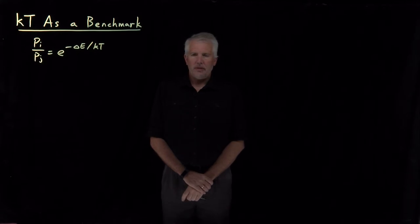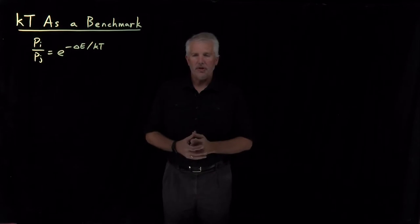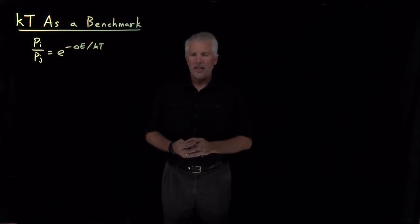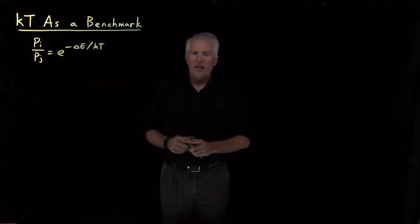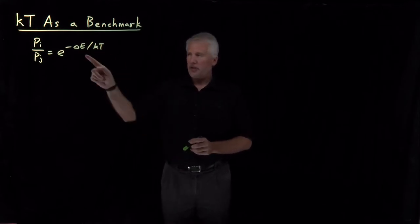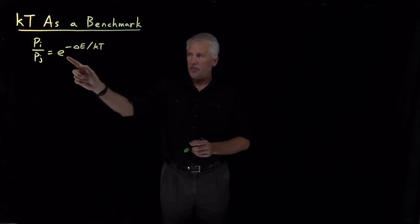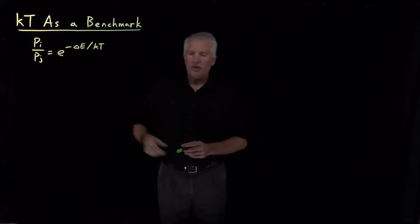As we've used the Boltzmann distribution, we've discovered that it's useful to be able to compare the difference in energy between two systems to kT — this ratio ΔE over kT. The reason that's useful is because this ratio ΔE over kT shows up in the exponential of this relative probability distribution.